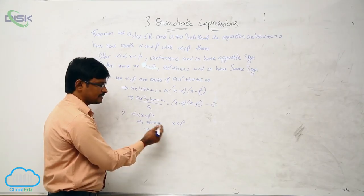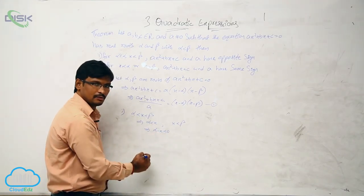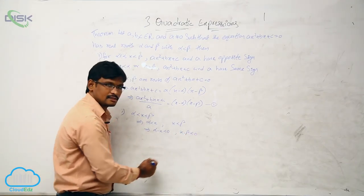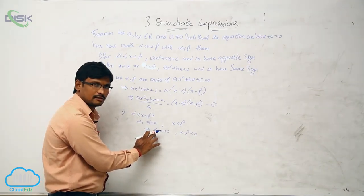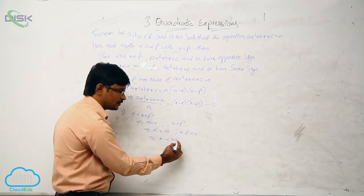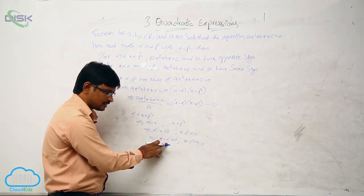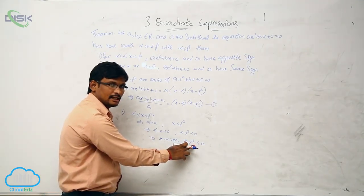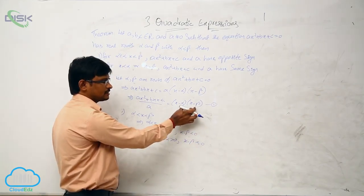If alpha is less than x, then alpha minus x is less than 0. And x minus beta is less than 0. Now if you negate the first one, you get x minus alpha greater than 0, and x minus beta less than 0. That is, x minus alpha is positive and x minus beta is negative. These two values apply here.